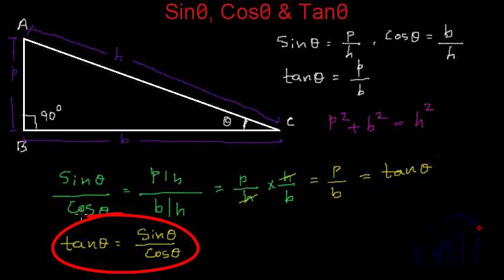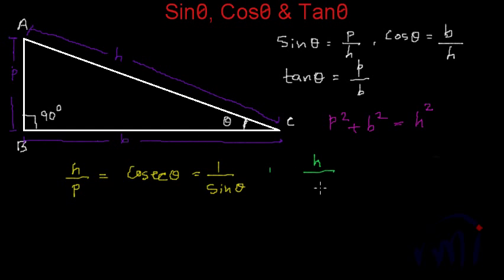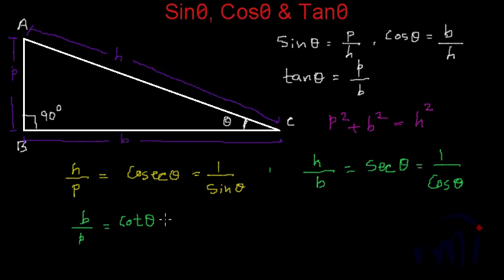So this is the relationship between sin theta, cos theta and tan theta. And if I talk about the ratio of hypotenuse to perpendicular, it is called cosec theta, which is 1 by sin theta. The ratio between hypotenuse and base is called sec theta, which is nothing but 1 by cos theta. Similarly, the ratio between base and perpendicular is called cot theta, which is nothing but 1 by tan theta. So cosec theta is the inverse of sin theta, sec theta is the inverse of cos theta, and cot theta is the inverse of tan theta.